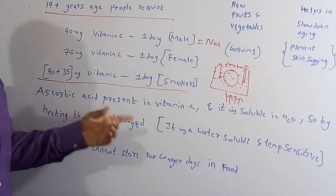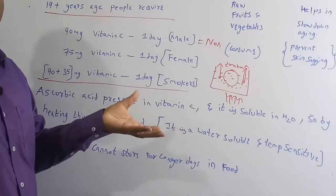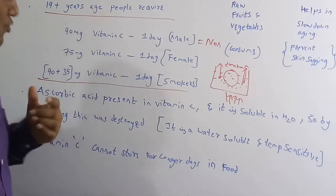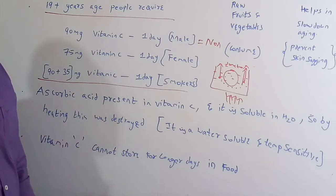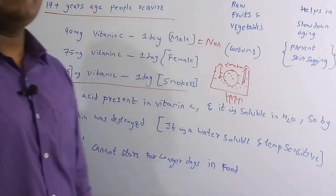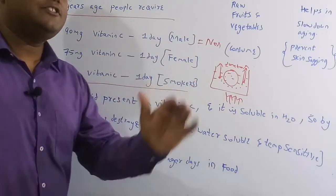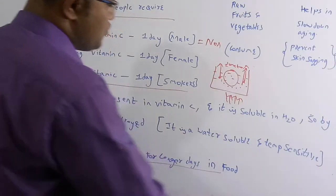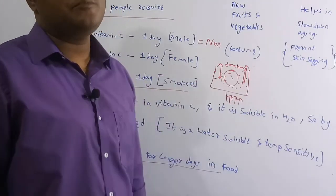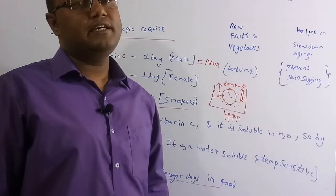Ascorbic acid is present in Vitamin C and it is soluble in water (H₂O). When you keep any fruit or vegetable in water, the Vitamin C dissolves, and if you heat it, it evaporates. Vitamin C is a water-soluble and temperature-sensitive vitamin. It cannot be stored in food for longer days, so always prefer to eat raw fruits and vegetables.